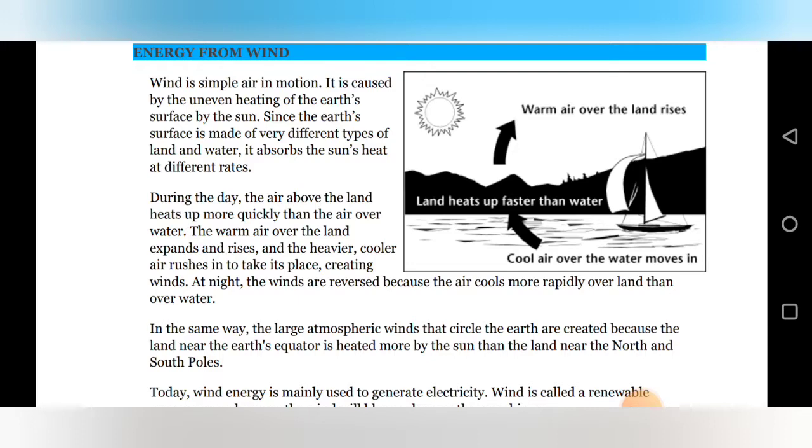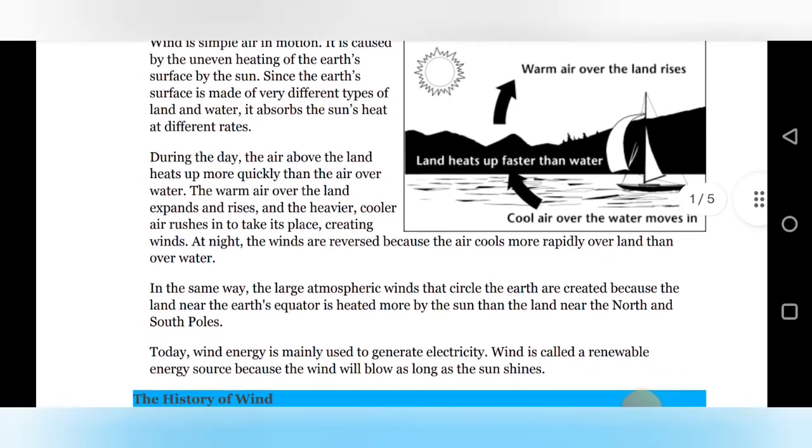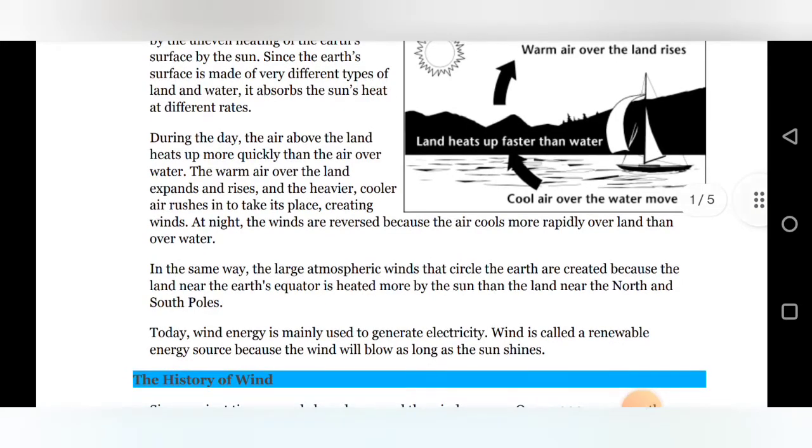So in the same way, the large atmospheric wind that circles the earth are created because the land near the earth equator is heated more by the sun than the land near the north and south. That's why air gets circulated and air flow gets continued. Today, wind energy is mainly used to generate electricity. Wind is called a renewable energy source because the wind will blow as long as the sun shines.